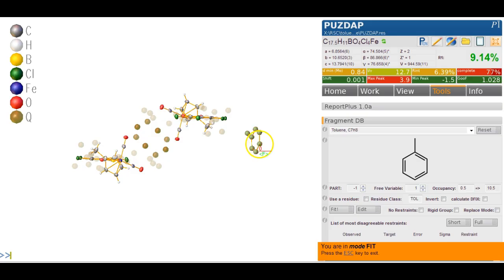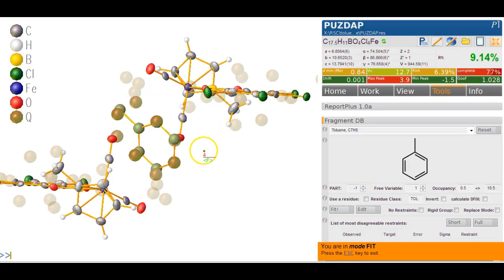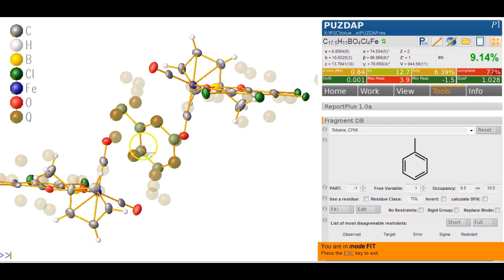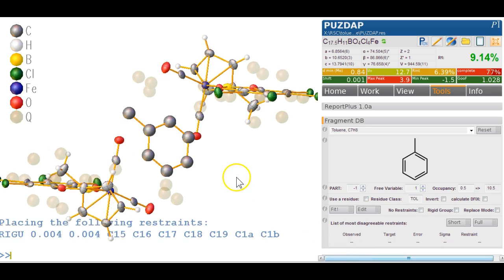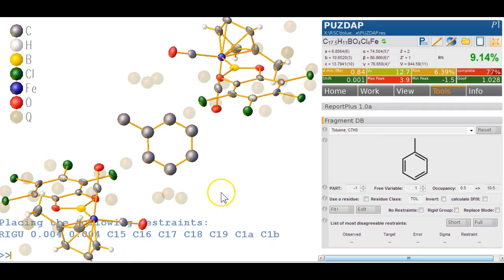So all we now need to do is match that carbon with that Q peak and then a second atom. So we click on the atom in the imported ring and on that Q peak and if you zoom in, that looks fairly good already, except we probably want that pair as well. Once we're done, we hit the escape key at the bottom here and we fitted this whole toluene into this structure.